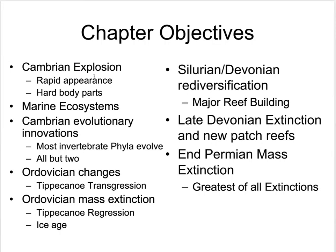Some of the objectives we'll look at in this chapter include the radiation of life, called the Cambrian Explosion. It's more that life developed hard body parts, which were easy to fossilize, so we see lots of fossils in this Cambrian period. We'll talk about marine ecosystems in terms of ecological roles and lifestyles in the ocean to get a sense of the complexity of ecology during this time. The Cambrian was really a time of experimentation where organisms experimented with phyla, which refers to the body type or body style.